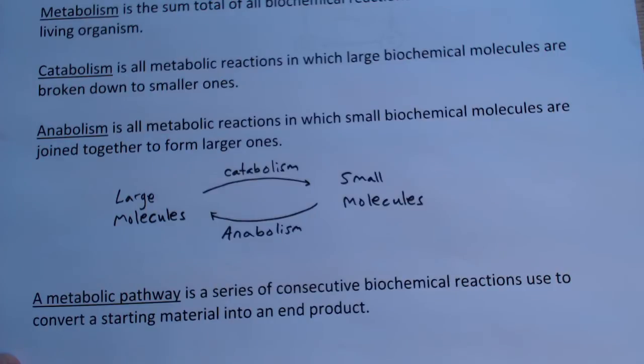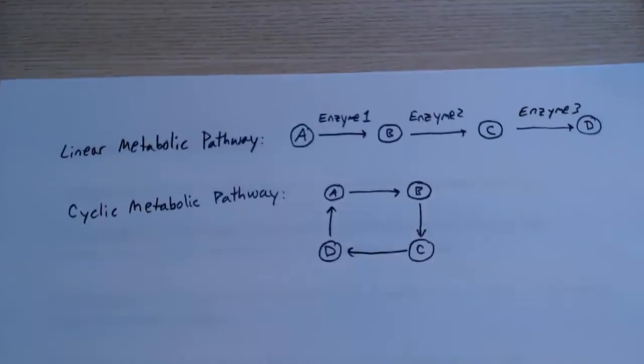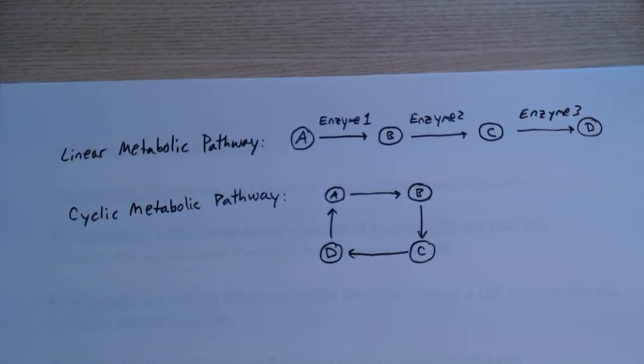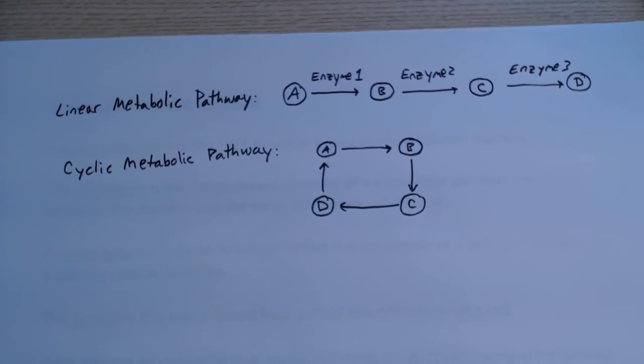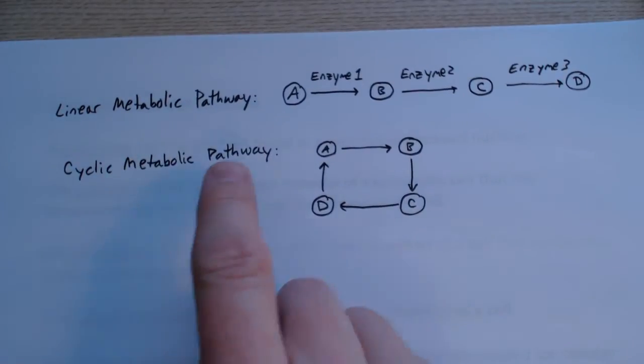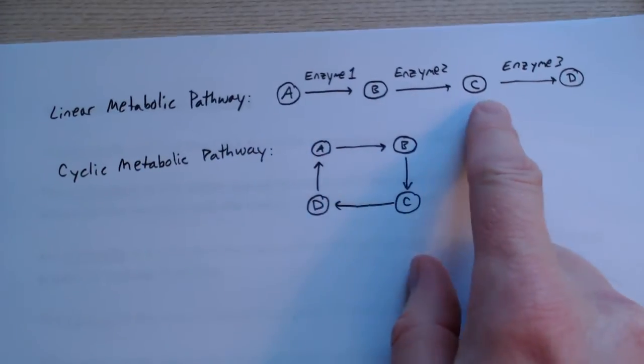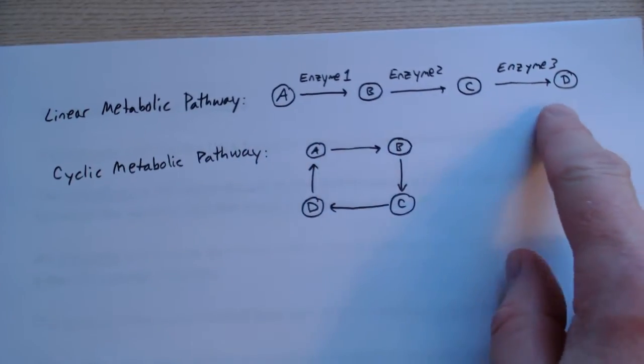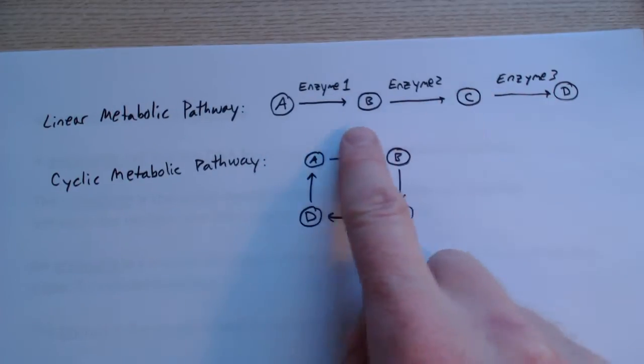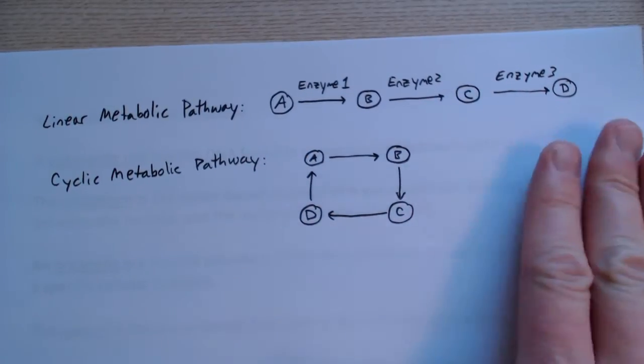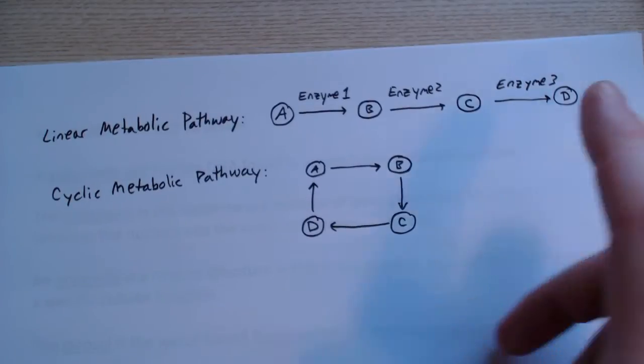There are two main forms of metabolic pathways, simplified of course. We have the linear metabolic pathway where A goes to B goes to C goes to D, a different product each time. They're generally catalyzed by enzymes, different ones as they go. But when we get to D, we're done, that's the product.